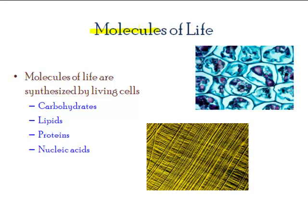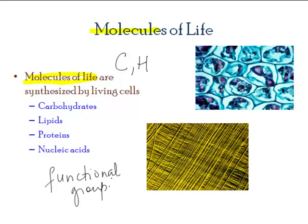The molecules of life, as they are called, are usually those that have carbon in them. Besides carbon, the second most abundant element present would be hydrogen. You will see the arrangement of carbon and hydrogen to form unique patterns, which are called functional groups. A functional group is a group of atoms that are covalently bonded to carbon, and each functional group is unique in each of these molecules of life.